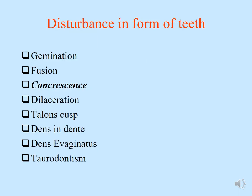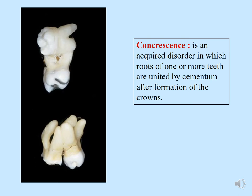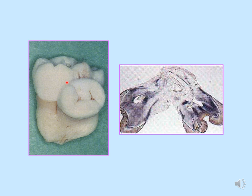The next is concrescence. Concrescence is an acquired disorder in which the roots of one or more teeth are united by cementum after formation of the crown. Fusion of teeth at the cementum is called concrescence. In this cross-section image, the crown structures are separate but the cementum is where the fusion takes place.